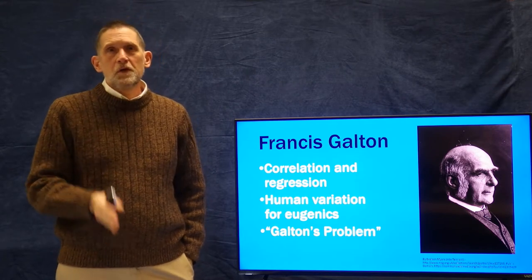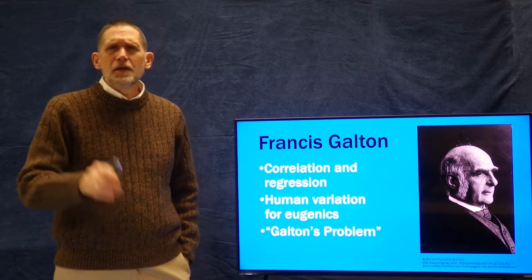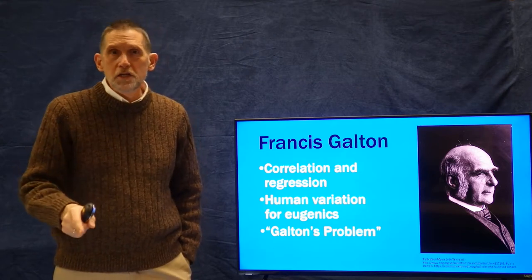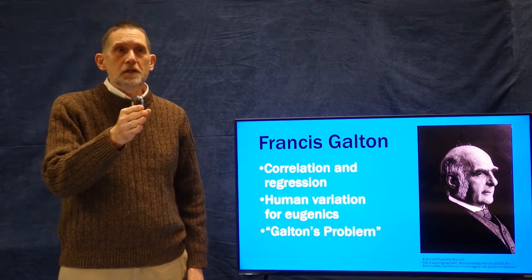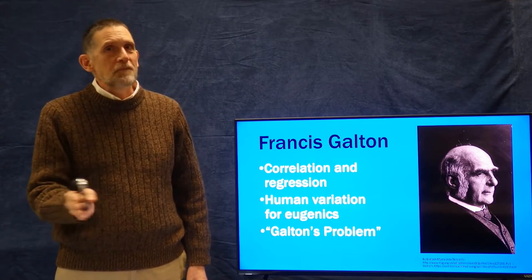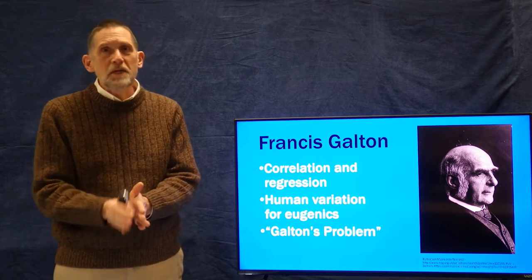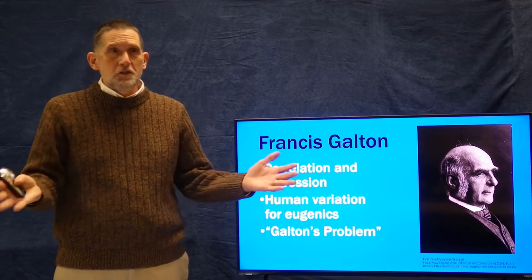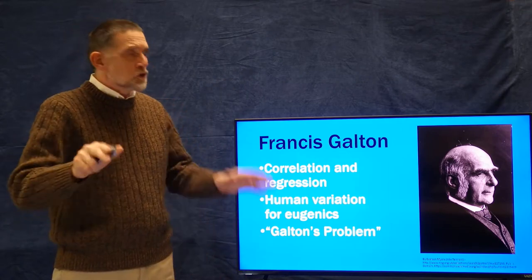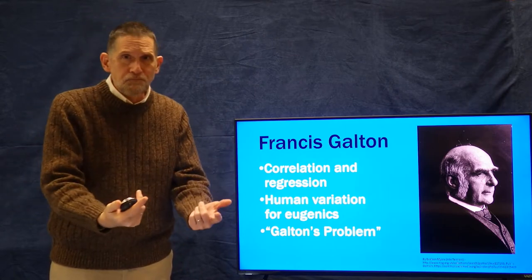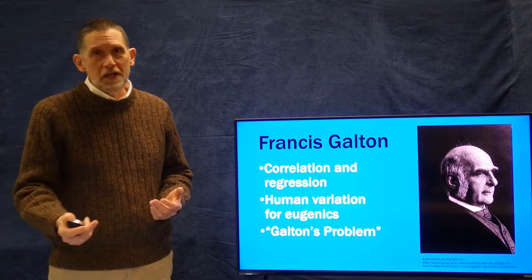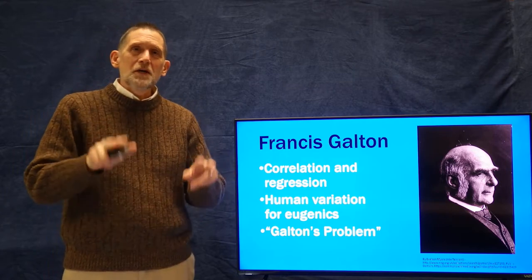That's Galton's Problem, and what it is today we call autocorrelation — the non-independence of cases. If your cases are not independent, you're going to have automatic correlation, because if case A correlates with some trait and case B is not truly independent from case A, they're obviously going to be correlated. It's a really important problem and it shows the degree to which Galton was anticipating developments in statistics that would occur decades later — all about understanding variation in humans.